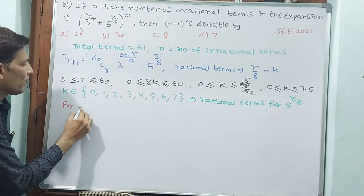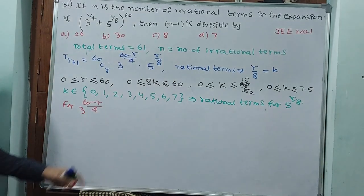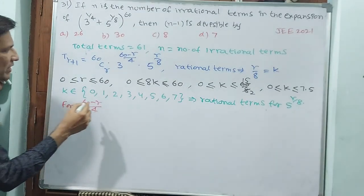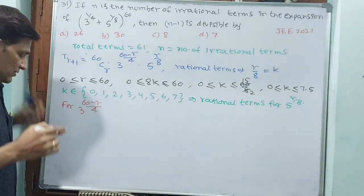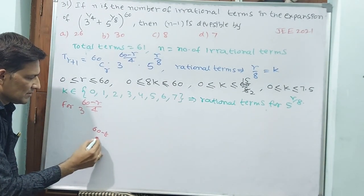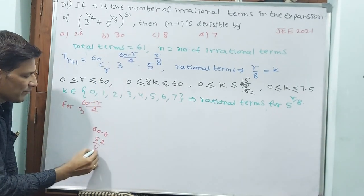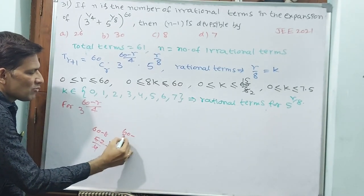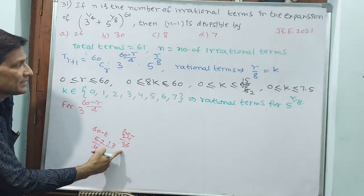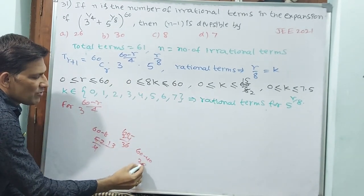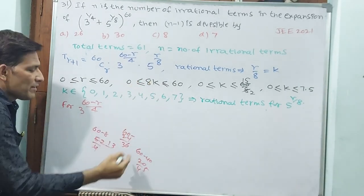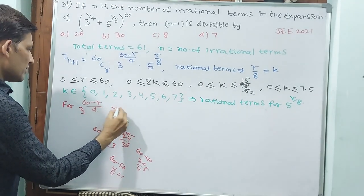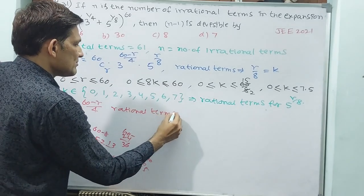For 3^((60-r)/4): checking all k values from 0 to 7. For r = 0, 8, 16, 24, 32, 40, 48, 56 — in each case (60 minus r) is divisible by 4. So these same 8 values of r make both 5^(r/8) and 3^((60-r)/4) simultaneously rational. These all numbers are useful for both terms — so all are rational terms.